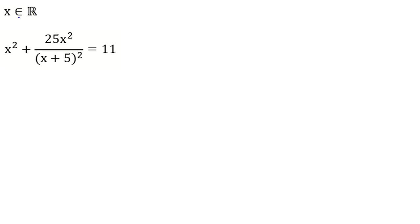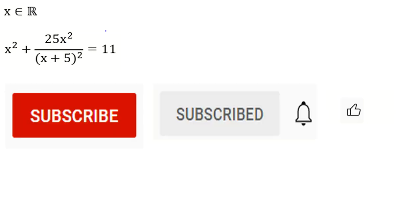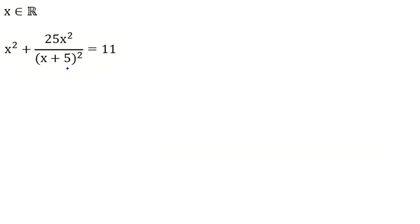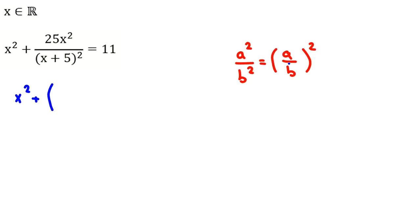We are going to solve this problem. x is a real number and the equation is x squared plus 25x squared, all over (x plus 5) squared, equal to 11. By the power rule, a squared over b squared equals (a over b) squared, so we can write this as (5x over (x plus 5)) squared equal to 11.